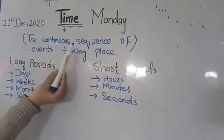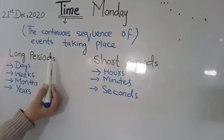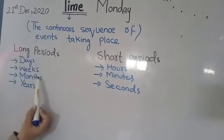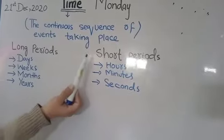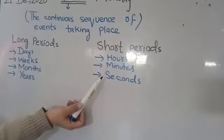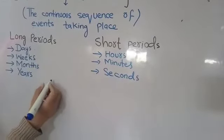Time is the continuous sequence of events taking place. Long periods can be measured in days, weeks, months, years. And short periods can be measured in hours, minutes, seconds.